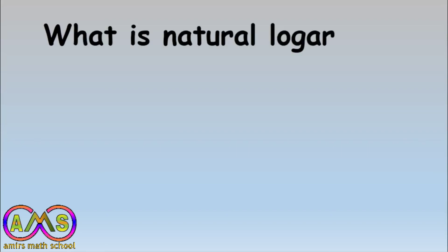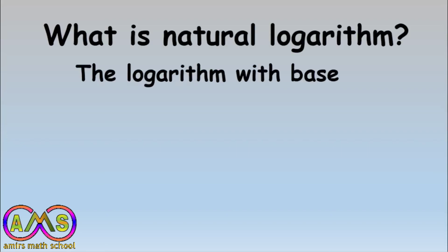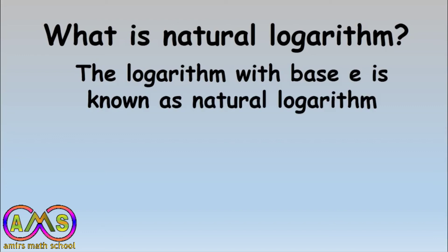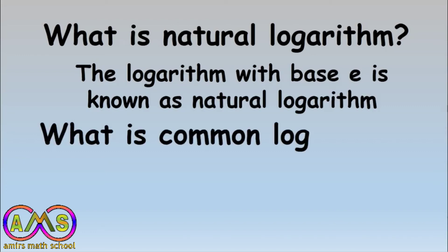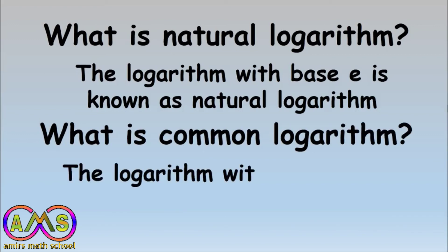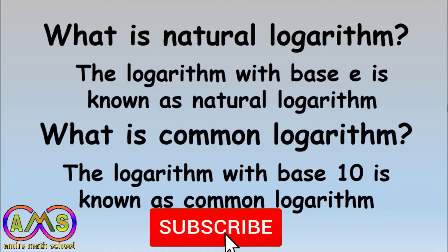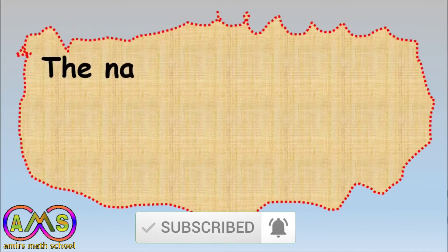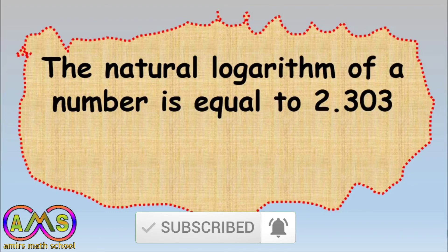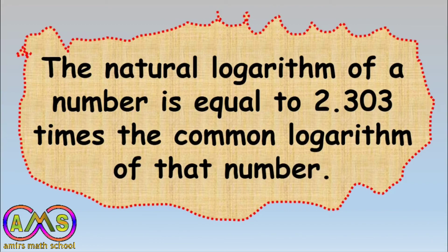This video is about the relation between the common logarithm and the natural logarithm. The logarithm with base e is known as the natural logarithm, and the logarithm with base 10 is known as the common logarithm. So the natural logarithm of a number is equal to 2.303 times the common logarithm of that number — that is the relation between them.